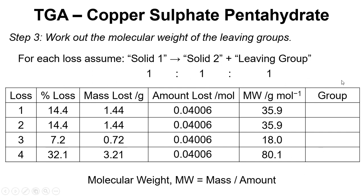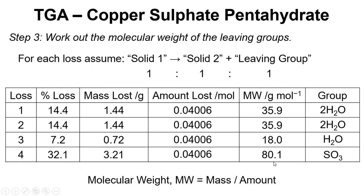The final step requires some detective work — thinking about what's going to be lost and what leaving group would give us this molecular weight. The solid material is CuSO₄·5H₂O, so the first thing to be lost is going to be the water, as that's easiest to take away as we heat up. If we have 35.9, rounding to 36, that's suggesting 2 lots of H₂O leaving. Again for the second loss it's indicative of 2 lots of H₂O. The third loss indicates 1 H₂O. For the final loss, the combination that fits is SO₃, though it's not thermodynamically favourable to leave as SO₃ — it will actually leave as SO₂ plus half O₂.